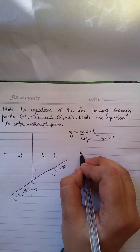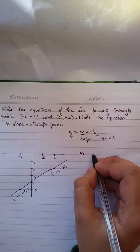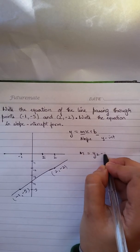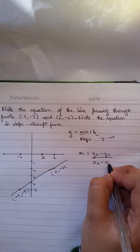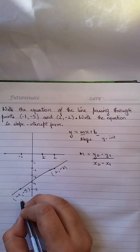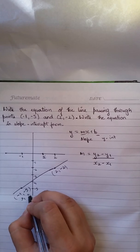So let's start by finding the slope. The formula of slope is y2 minus y1 over x2 minus x1. So let's say this is my x1 and this is my y1, this is my x2 and this is my y2.